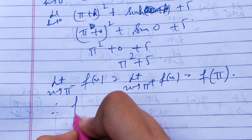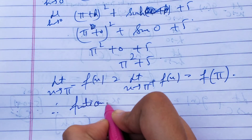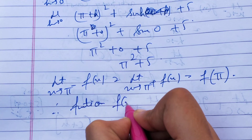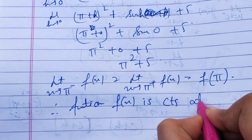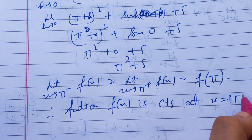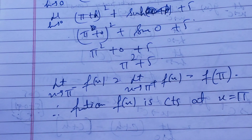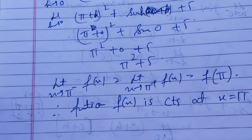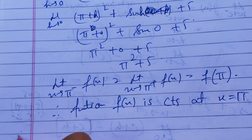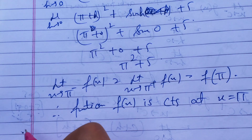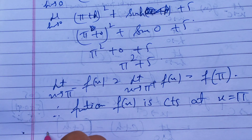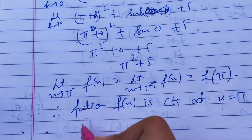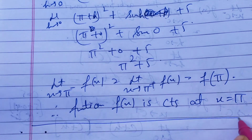Therefore, function f of x is continuous at x equals pi. This is our question number 20. Today we have done two questions, 19 and 20. In our next lecture we will do the next questions. Thank you.